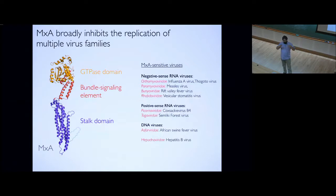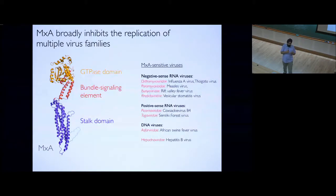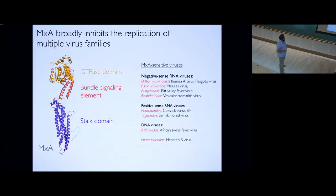Work from a number of labs suggested MXA is actually very broadly acting. Even though it was discovered because of influenza activity, it turns out to go after every class of viruses that we know of. I'm framing this in a protein evolution context — just like PKR — hoping to derive general principles about protein evolution that extend beyond MXA.